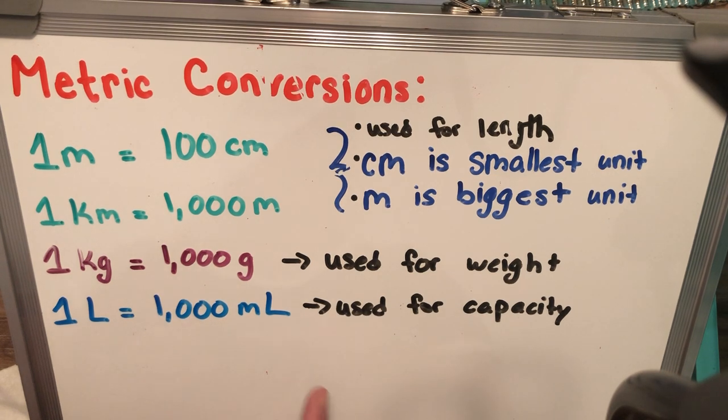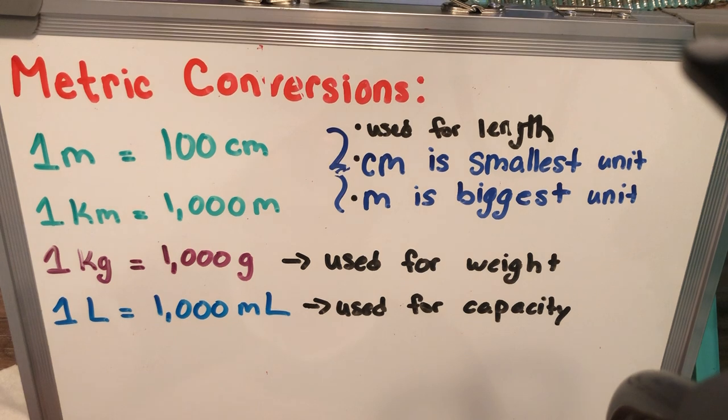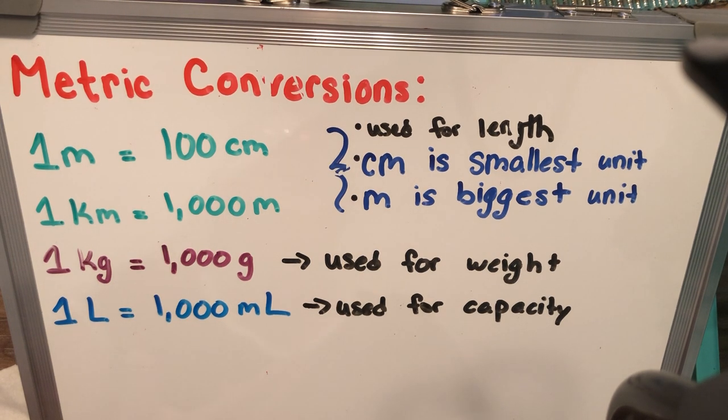And when we use kg and g, which is kilograms and grams, we use that for weight, how much something could weigh. And liters to milliliters is used for capacity, which means if I had an empty soda bottle and I filled it up with water, the amount of water that I just filled that bottle in is called capacity. All right, so we're going to get started with some converting and we're going to practice a little bit.